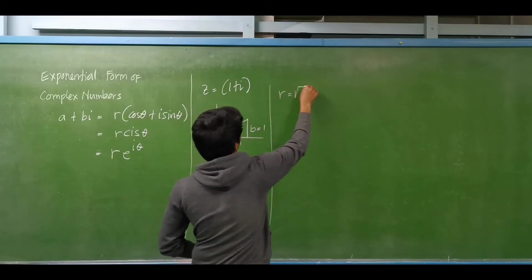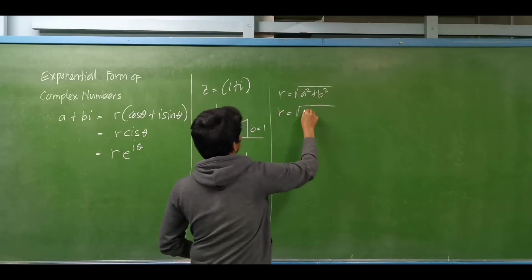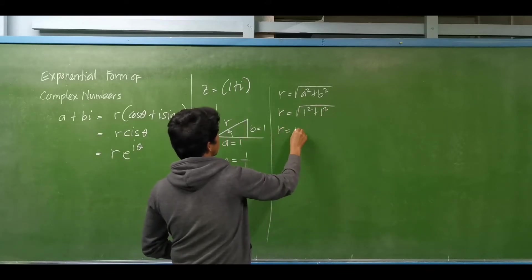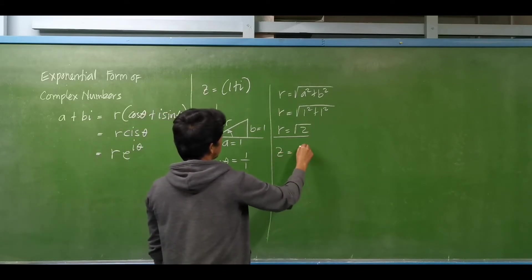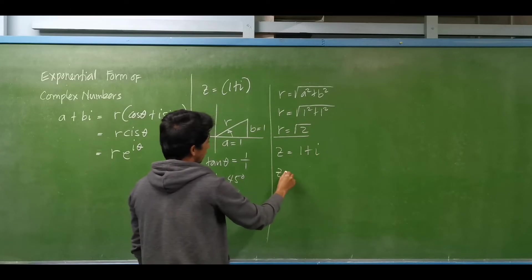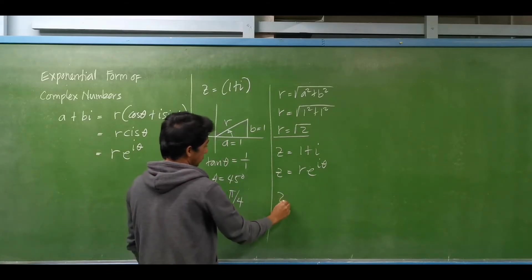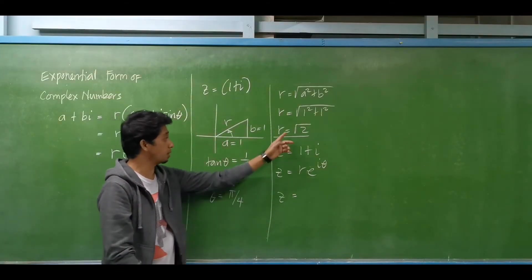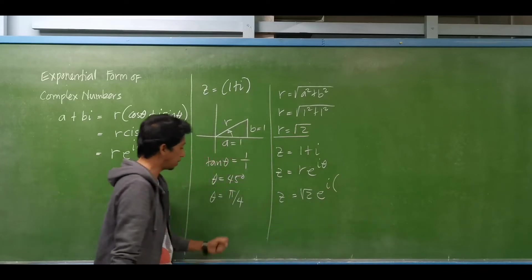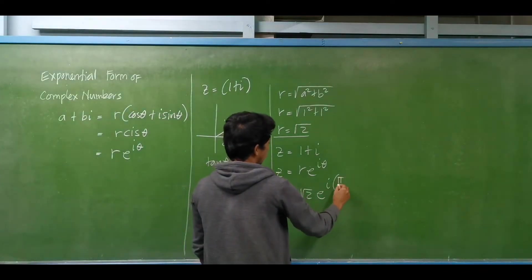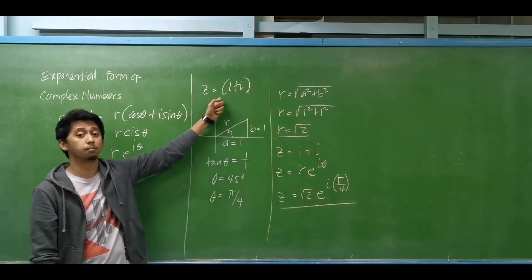We need the modulus: R equals the square root of A squared plus B squared. So R equals the square root of 1 squared plus 1 squared, which gives us the square root of 2. Therefore, the complex number Z equal to 1 plus i in exponential form is the square root of 2 times E raised to i times pi over 4. This is the exponential form of this complex number.